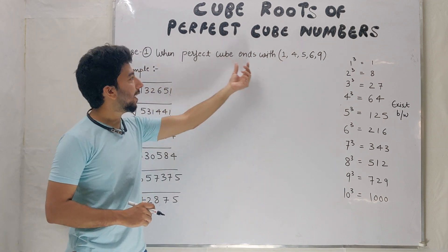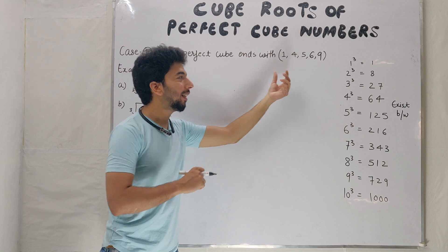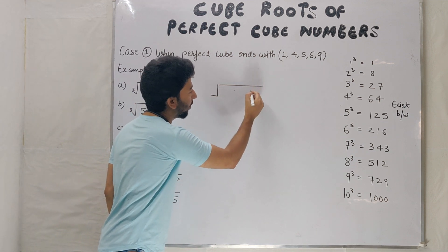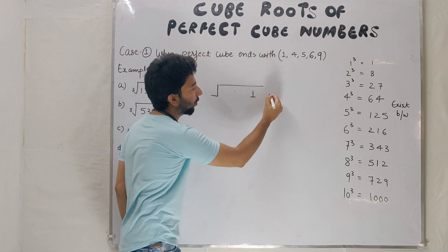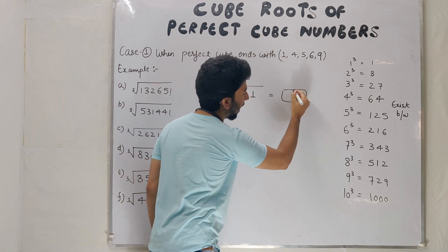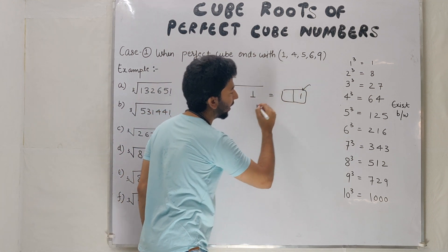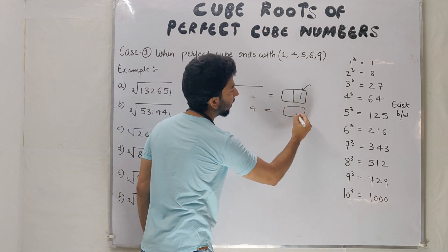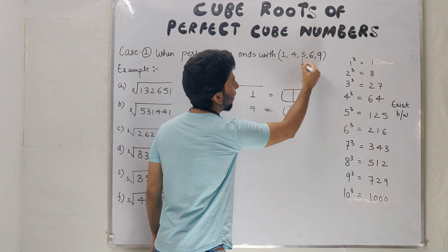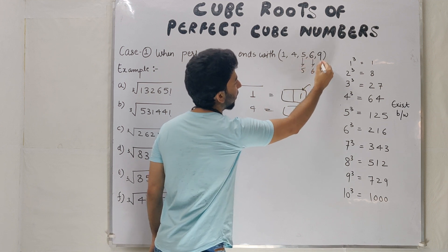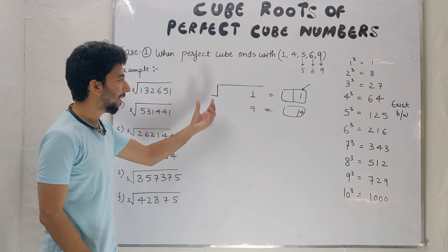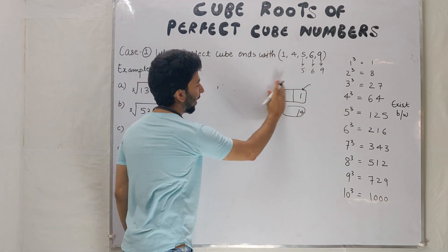So in this category we will keep all these numbers as a cube. Because when cube number ends with 1, then the cube root unit place is the same. Same for 4, 5, 6, and 9 - the unit place remains the same. So in this category we will keep all these numbers. So let's start with the examples.